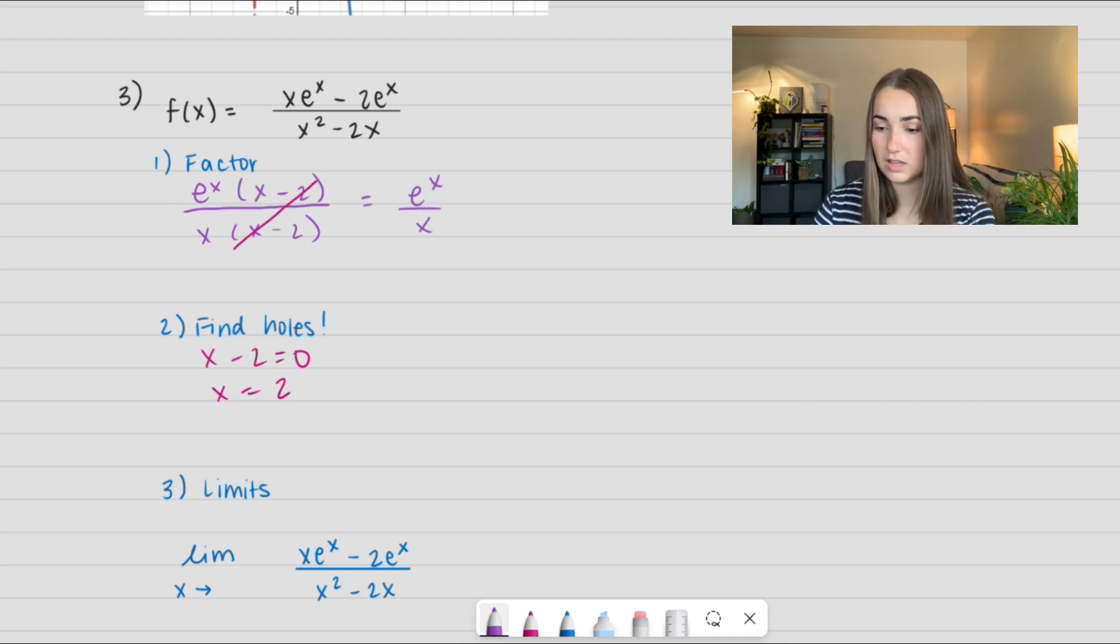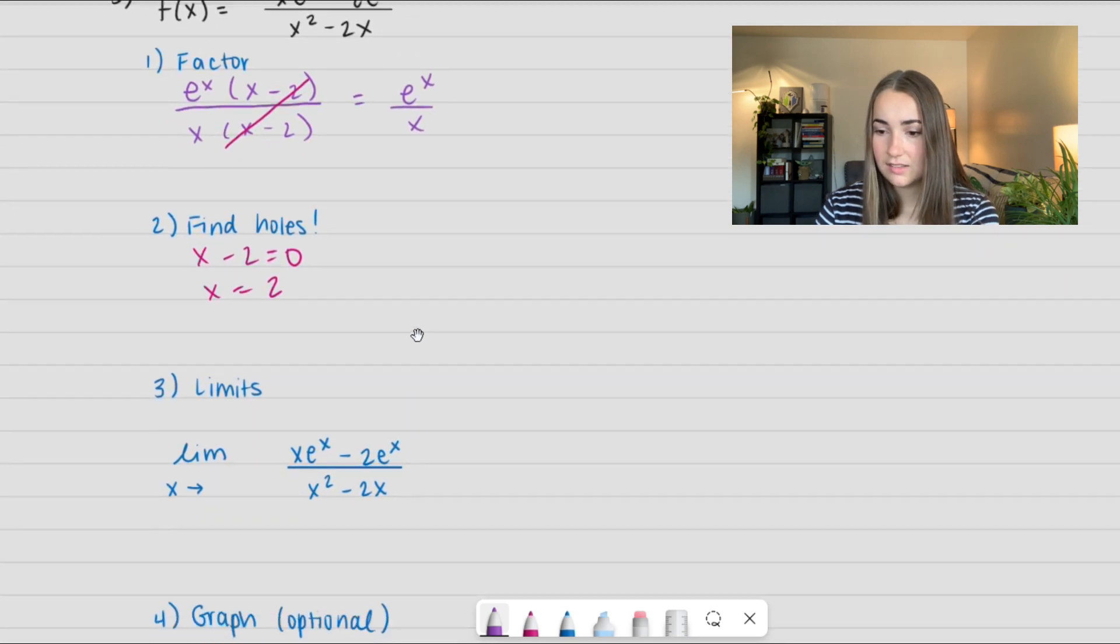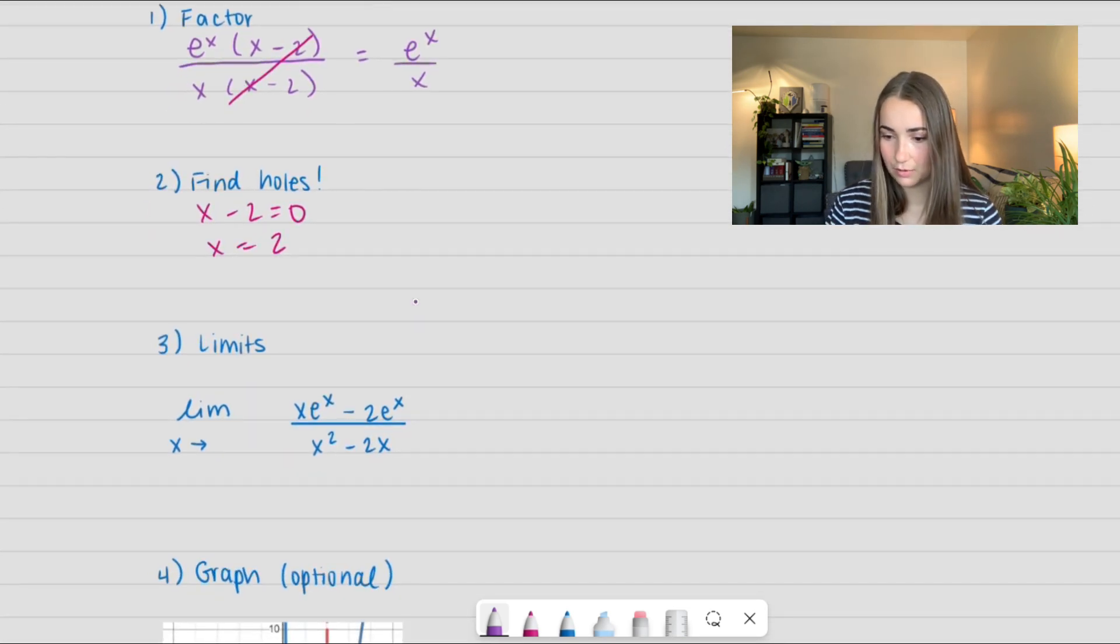So let's go ahead and plug all of this into the limit. So here I'm going to have the limit as x approaches 2 of the original function, and I'm going to plug in our simplified. And now I can just plug that in using direct substitution. So I get e²/2. So this tells us we have a hole at x = 2 and e²/2.